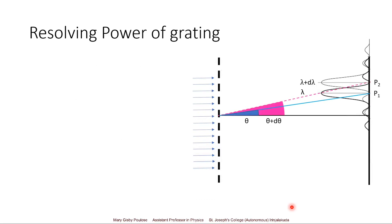Let us derive the resolving power of a grating mathematically. In the figure, we have a grating on which light is incident. The wavelength λ will form a diffraction pattern shown by the dark line, whereas λ + dλ (a small change) produces another pattern, slightly fainter. We assume light has two wavelengths — λ and λ + dλ — and both form their diffraction patterns at separate points P1 and P2.